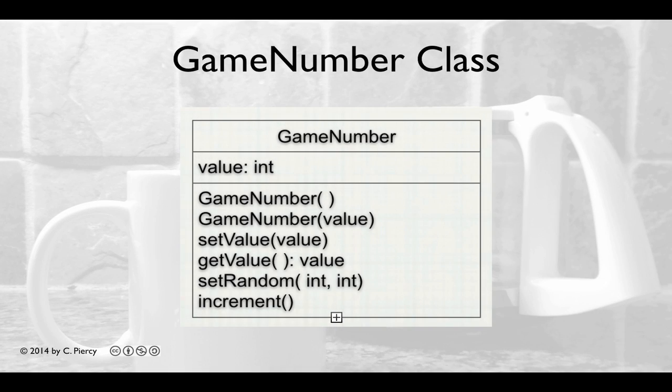To model all of the numbers that we have in the game, we're going to use the GameNumber class. The GameNumber class will be able to store a value and have some methods that will help us set a random value when it's the target, or increment its value, for instance when it's the number of guesses. The GameNumber class will be a model or helper class to be used when appropriate by our GameServlet and our index.jsp.